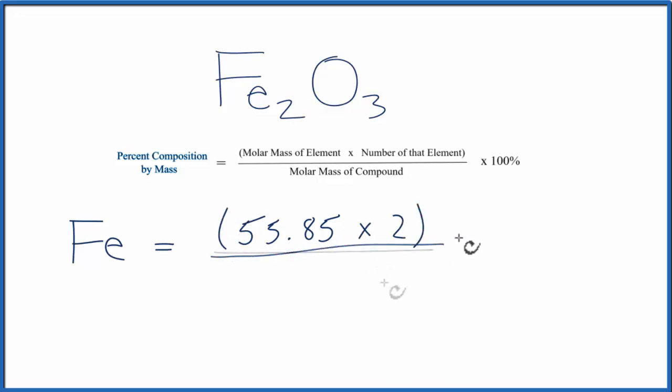Then we'll divide that by the molar mass of the entire compound. That's the whole thing. So to calculate the molar mass of Fe2O3, we add the two irons and the three oxygens together, and we'll get a total molar mass of 159.70, and that's grams per mole. So let's put the molar mass of the whole compound down here, 159.70.